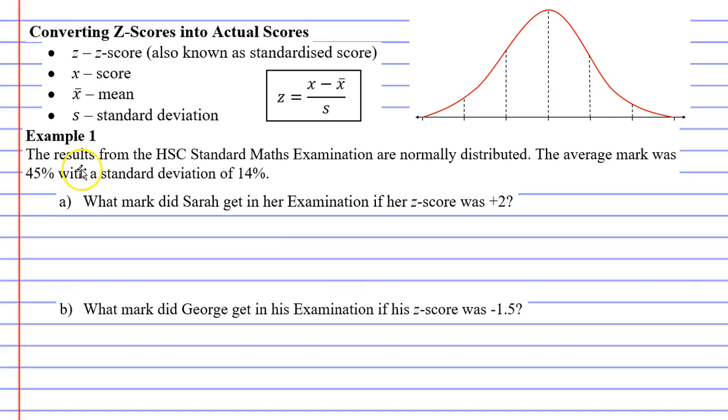In example 1, the results from the HSE standard maths examination are normally distributed. The average mark was 45% with a standard deviation of 14%. There are two parts to this question, A and B, and there are two methods we can use to solve either one. One method is to label the z-scores on our bell curve and the second method is to use the formula. I'm going to show you both methods. When questions get more challenging you really have to use the formula.